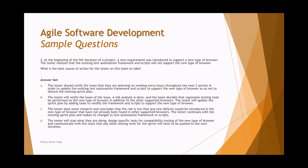Option D says the tester stops what they are doing, designs specific tests for compatibility testing of the new browser, and communicates that other testing work will be pushed to the next iteration. However, the problem is about the automation framework and scripts generally, not specifically compatibility testing — so option D has no direct relation to the scenario. The most relevant answer is B. One word can change the entire meaning of a statement and rule it out completely.